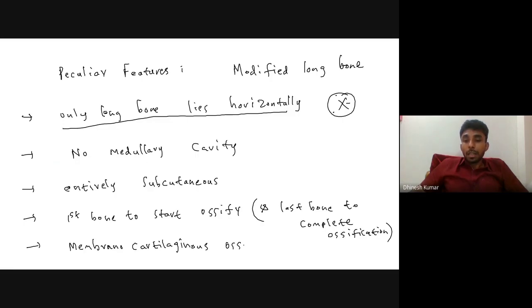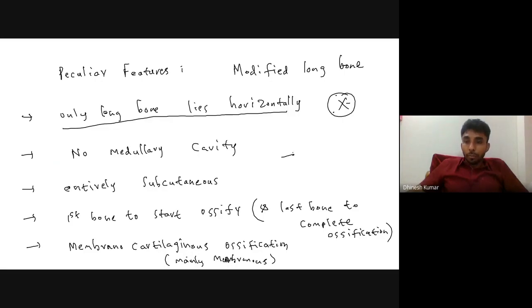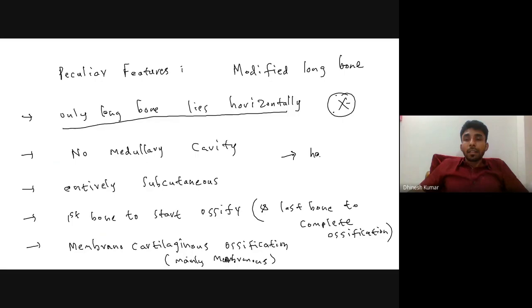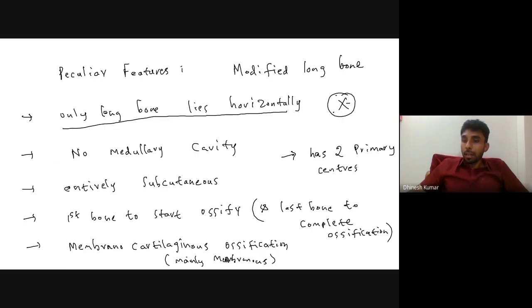Remember it is mainly membranous ossification. Also, the clavicle has two primary centers of ossification.